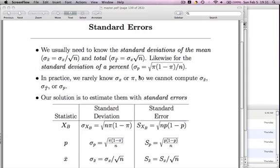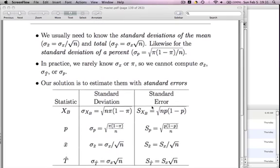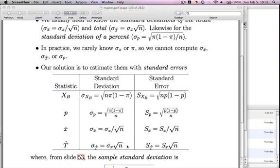So what is a standard error? Well, standard errors are just like standard deviations. Earlier in chapter 8, you had these four formulas for standard deviations: standard deviation of a count, standard deviation of a percent, standard deviation of the mean, and standard deviation of the total. The problem with all of these standard deviations is that they depend on knowing parameters that are usually unknown.